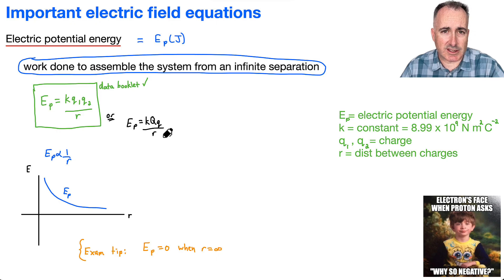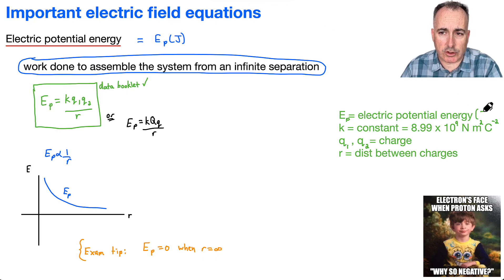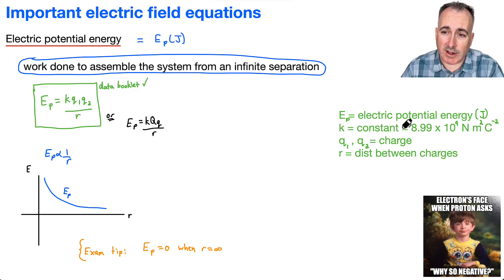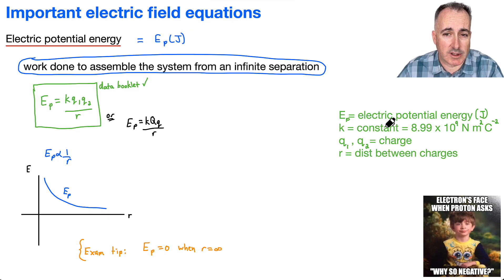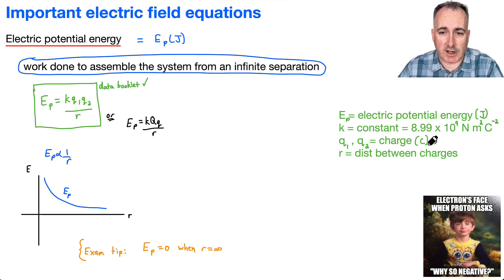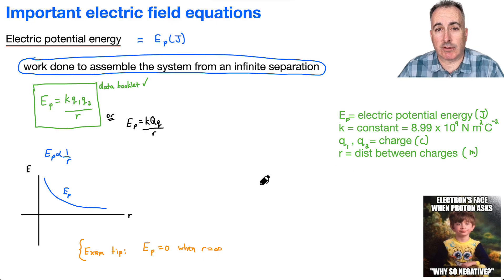Let's take a look at these different units. Electric potential energy is measured in joules. We've got K, which is our constant — that's 8.99 times 10 to the 9, your Coulomb's constant. Then we've got Q₁ and Q₂ — those are charges, so that's in coulombs. And R is the distance between those charges, measured in meters.